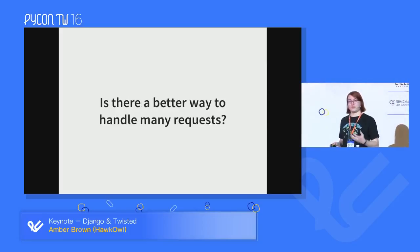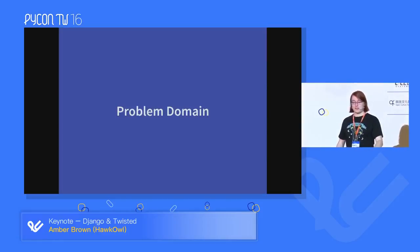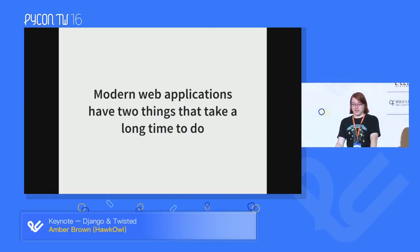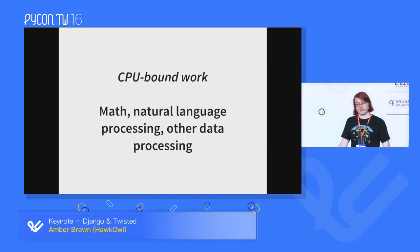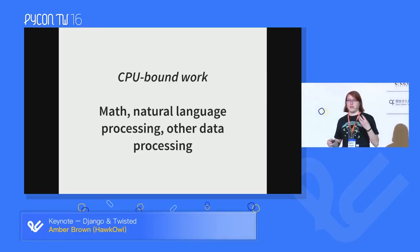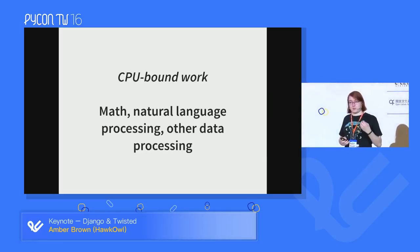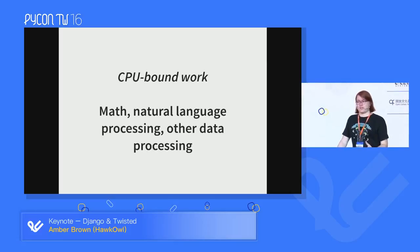But is there a better way to handle lots and lots of requests? Let's look at the problem domain. Modern web applications have two things that take a long time in serving a request. First is CPU-bound work — things like large amounts of math, natural language processing, big data processing — when you're doing a lot of stuff that uses a lot of CPU.